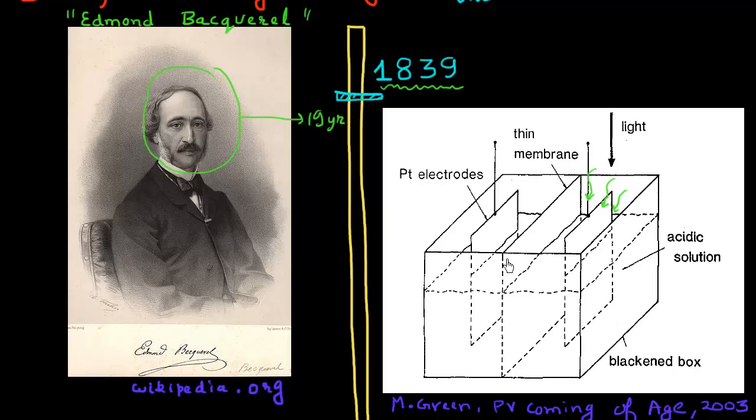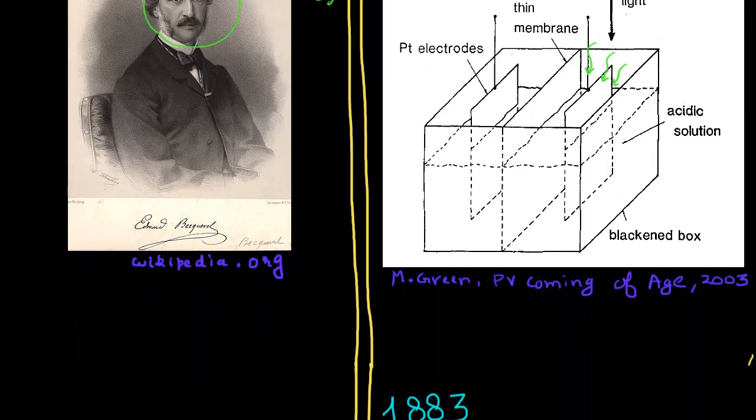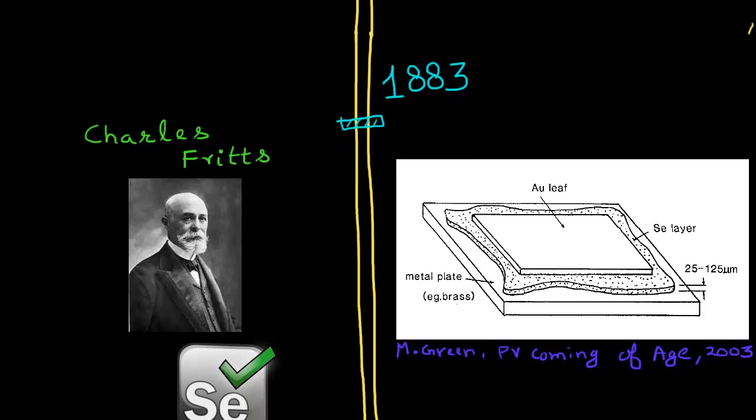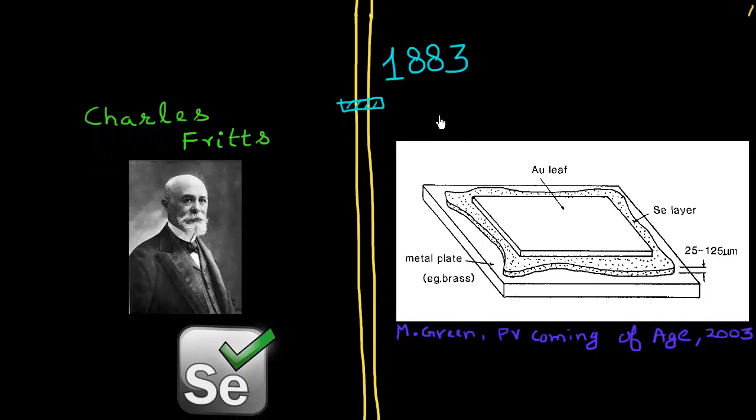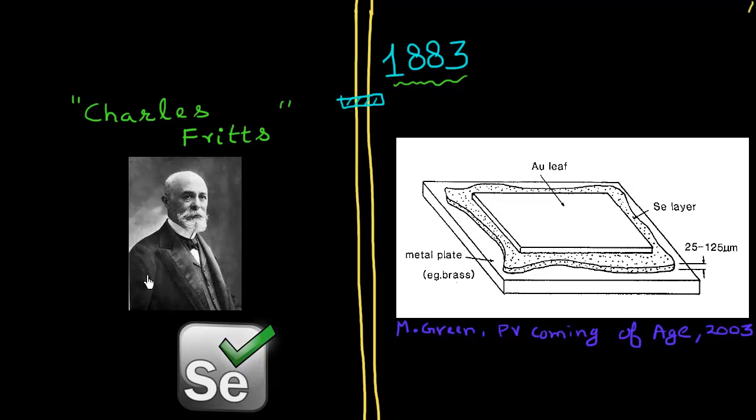But this was not a solid state device. In fact, this was a electrolytic solution. So the first demonstration of what you can call a solid state photovoltaic effect in a solid state device and our first solar cell made of a semiconductor could be credited to this gentleman, Charles Fritts. And he was an American inventor. And he was experimenting with selenium. And a lot of the early demonstration of solar cells were done in this material, selenium, which was one of the semiconductor materials which you could get your hands around easily in those days.